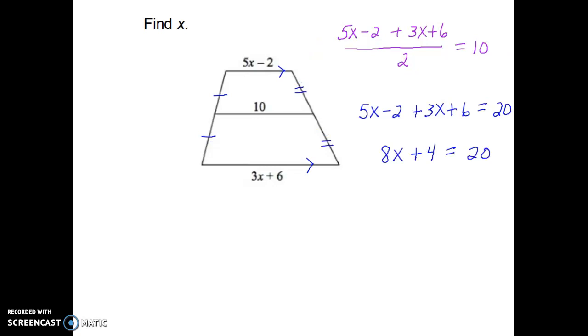Now if I just use my algebra skills to finish this, I can combine my like terms together. Next, I would want to subtract 4 from both sides. And last to find x, I would have to divide by 8 on both sides. So my value for x would equal number 2 in this example.